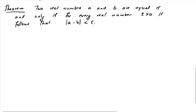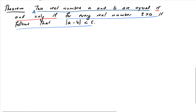Here's our sample theorem: it's a theorem about equality of real numbers, stating that two real numbers A and B are equal if and only if, for every real number epsilon greater than zero, the absolute value of A minus B is less than epsilon. We need to break this down into structure: statement A is that the two numbers are equal, and statement B is the quantified condition — for every real number epsilon greater than zero, the absolute value of A minus B is less than epsilon.